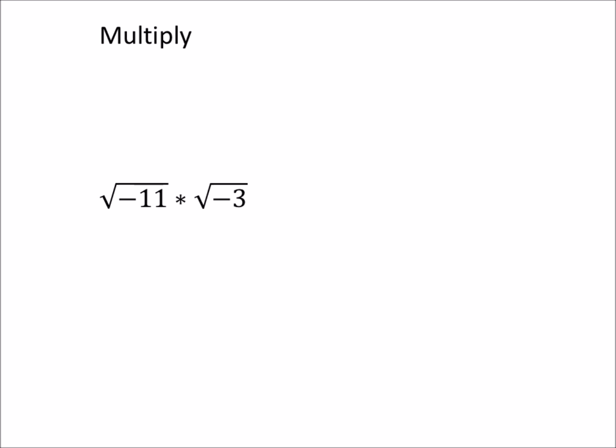Because I'd have two negatives being multiplied together. Since I have these two negative square roots multiplied together, though, what I can do is pull out an i from each of these. So I'd have i times the square root of 11 times i times the square root of 3.